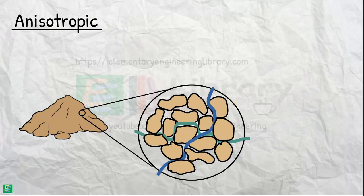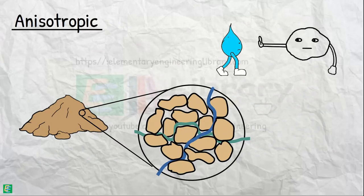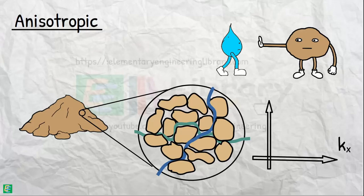In an inhomogeneous soil deposit, water faces different movement resistances when it moves in different directions as the soil has different types of variations in different directions. Consequently, we observe different values of permeability in different directions.